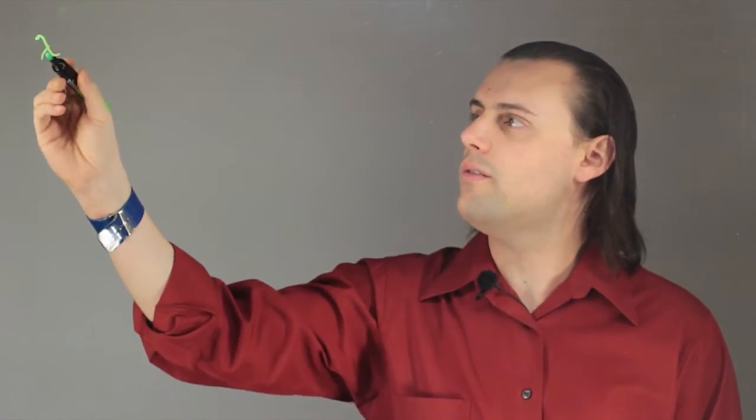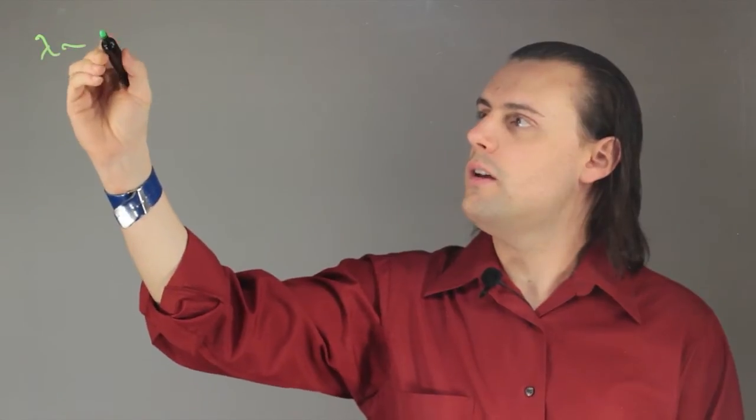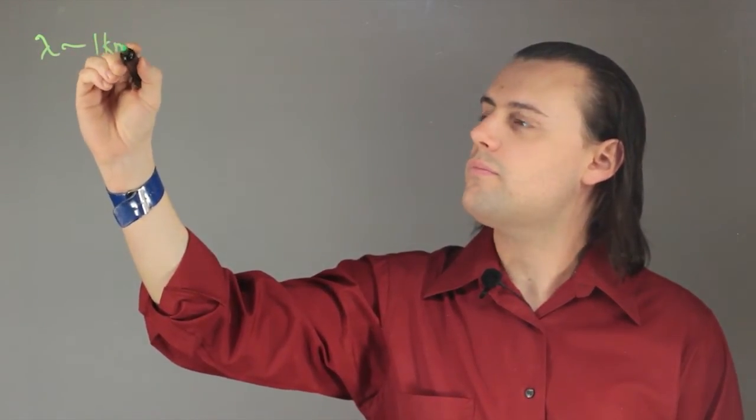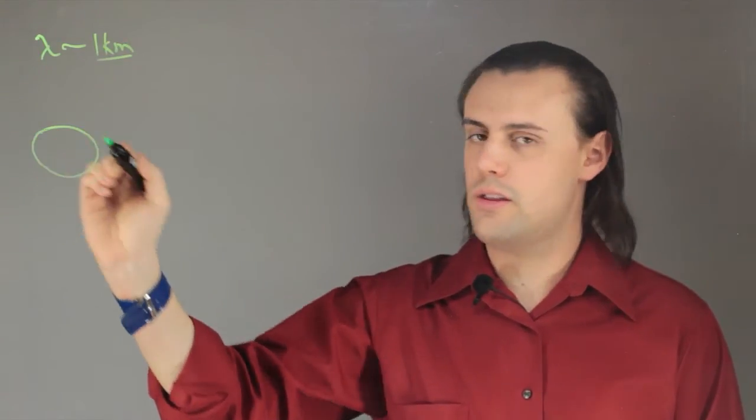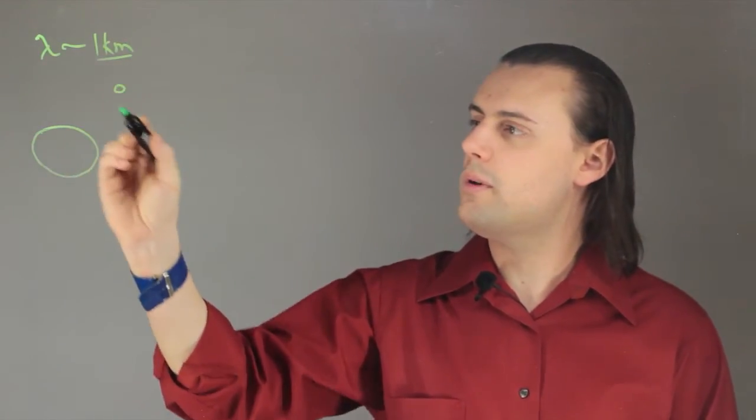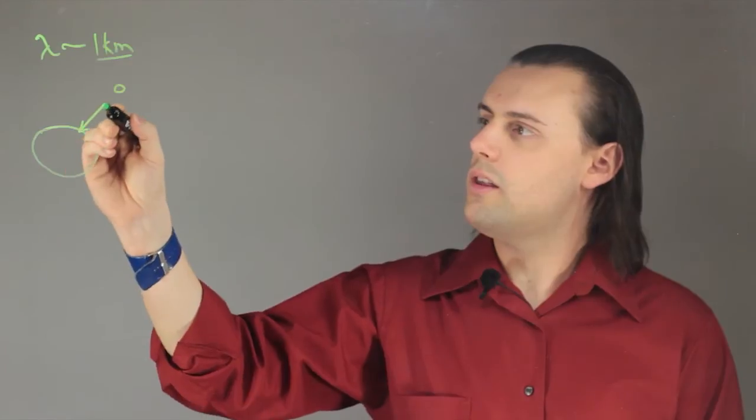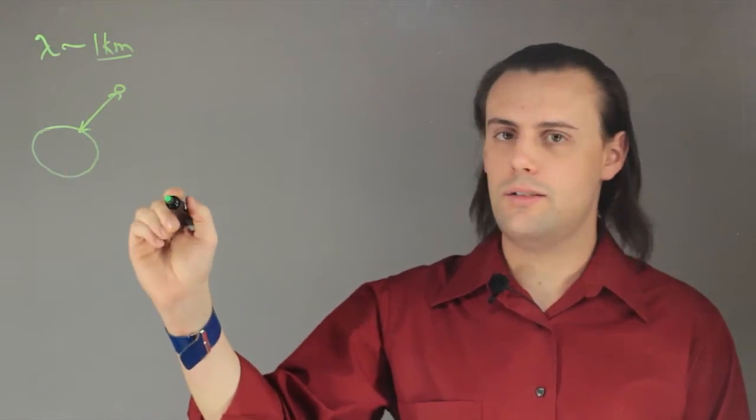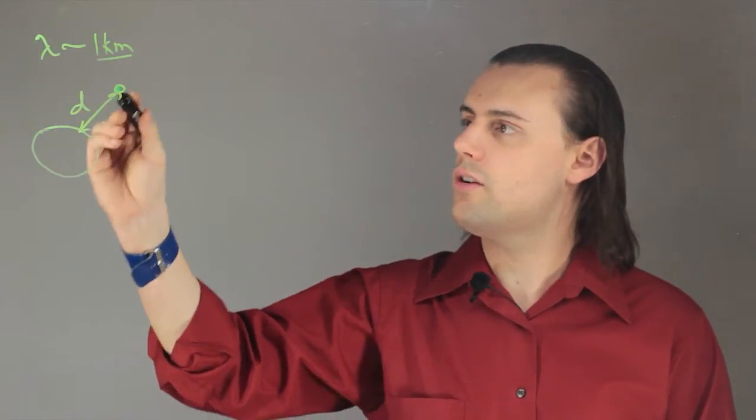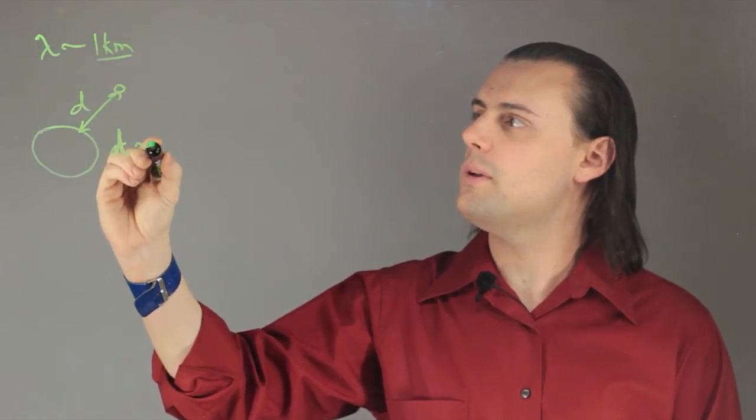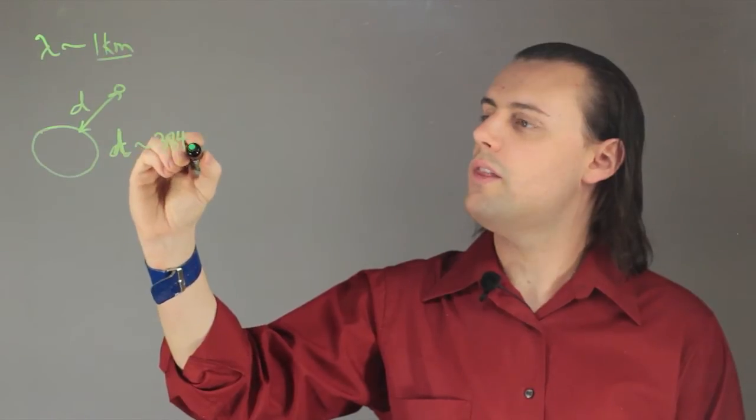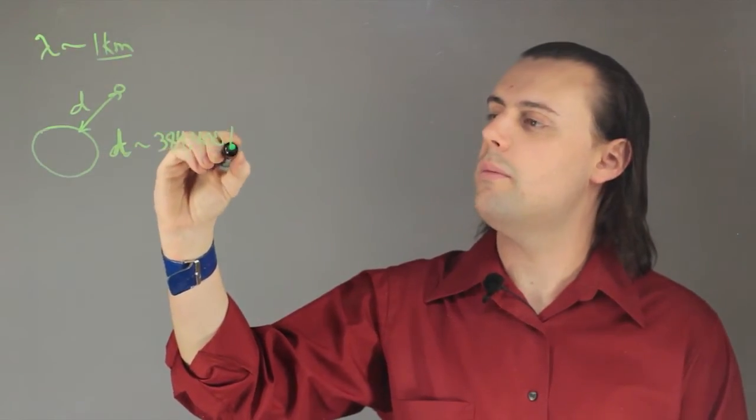So radio waves will have wavelengths on the order of a kilometer. And if we consider the Earth and the Moon orbiting the Earth, the approximate or average distance, d, between the Earth and the Moon is approximately 384,400 kilometers.